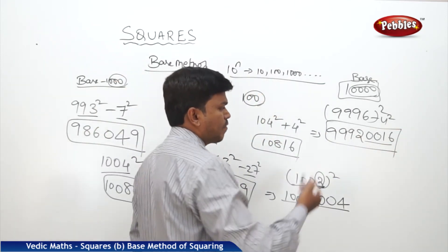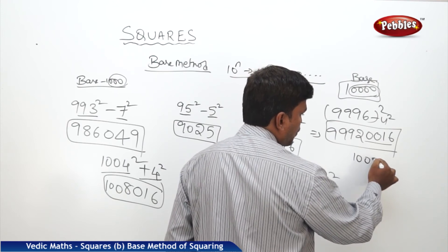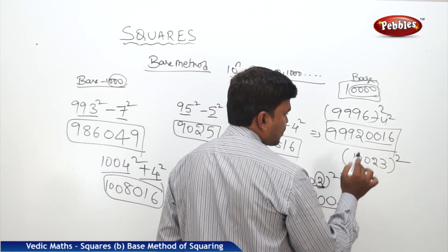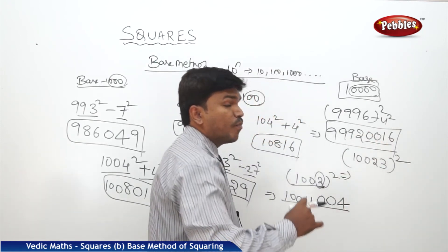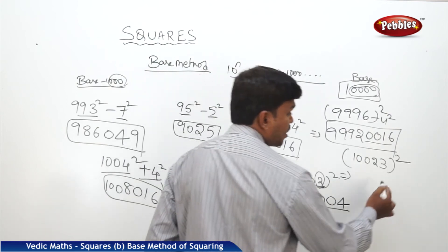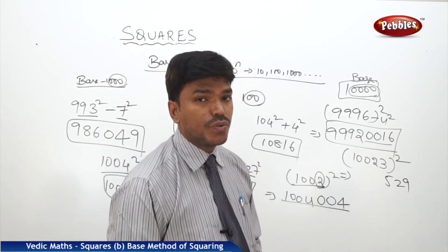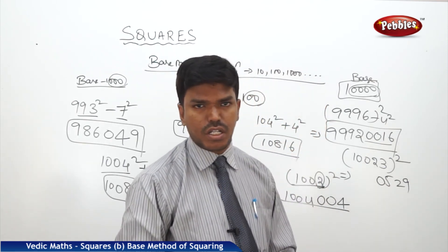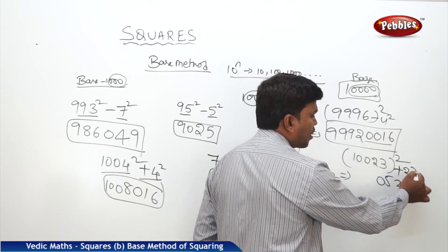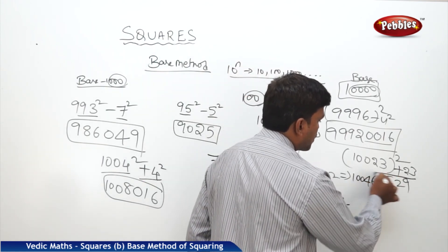If the number is more than the base 10,000, for example 10023 square: compare with base 10,000 — it is more by 23. What is 23 square? 529. But we need 4 digits on the right side, so add a zero before to get 0529. Now the left side: 10023 plus 23 is 10046. So your answer is 100460529.